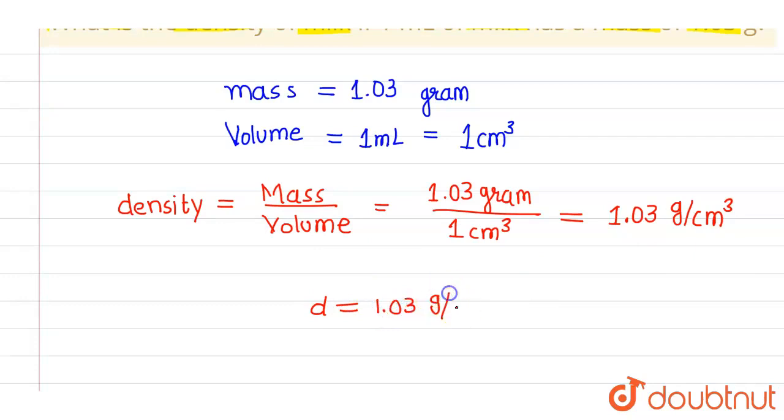So this is the density we got. The density of milk comes out to be 1.03 grams per centimeter cubed. This is our final answer. I hope you understood. Thank you.